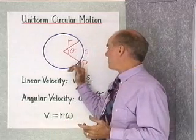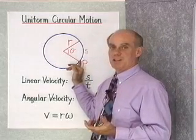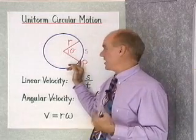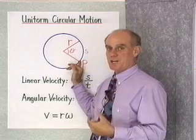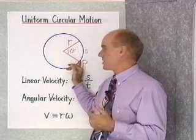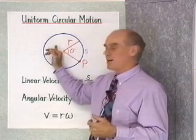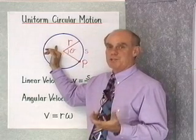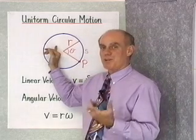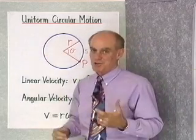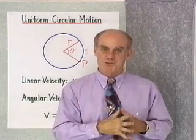For example, if point p travels a distance of 5 feet in 2 seconds, its linear velocity is 5 divided by 2, or 5/2 feet per second. If the point goes through π radians in 3 seconds, then the angular velocity is π over 3 radians per second. Now let's go to the board and work some problems involving uniform circular motion.